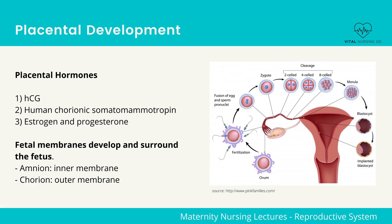The fetal membranes that develop and surround the fetus are the amnion, which is the inner membrane, and the chorion, which is the outer membrane.